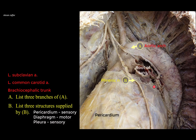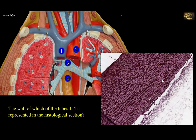Note that there is another nerve that also descends from the neck but passes posterior to the root of the lung — this is the vagus nerve, the tenth cranial nerve. The question now asks: the wall of which of the tubes, one to four, is represented in the histological section?